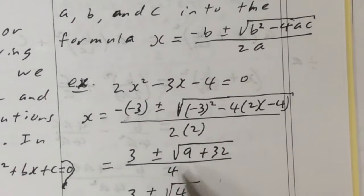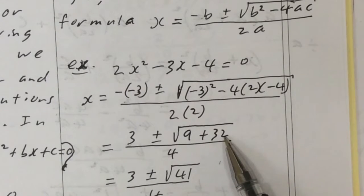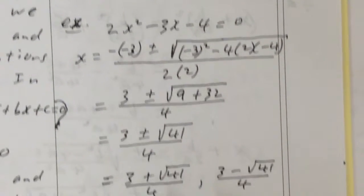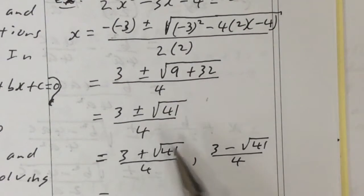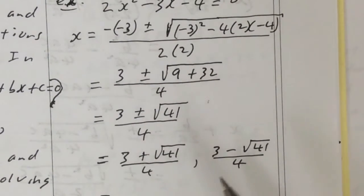So if you simplify this, you get 3 plus or minus 9 plus 32 is what works out inside here, over 4. And you get 3 plus or minus root 41, over 4. So the answers are 3 plus root 41 over 4, and 3 minus root 41 over 4. And you can plug those into your calculator to get the decimals.